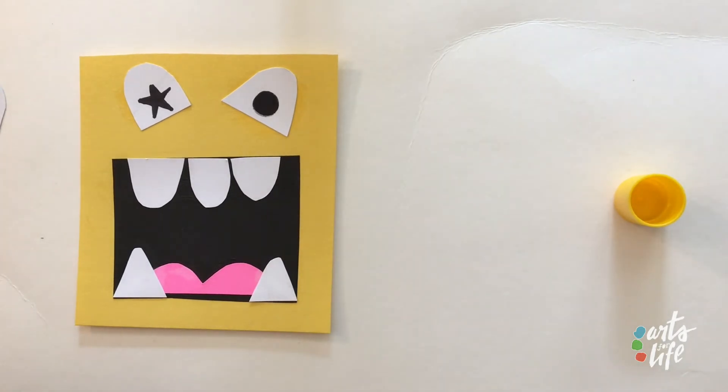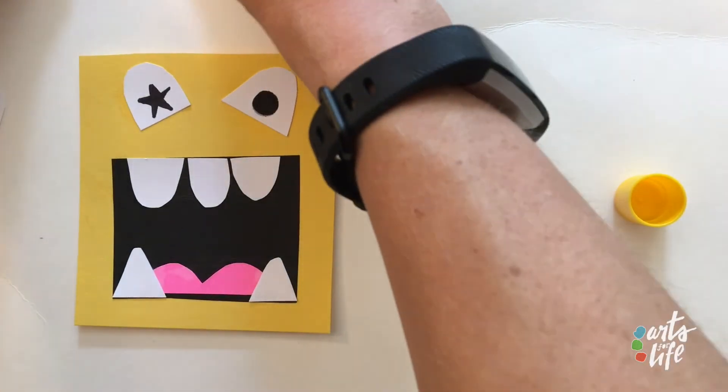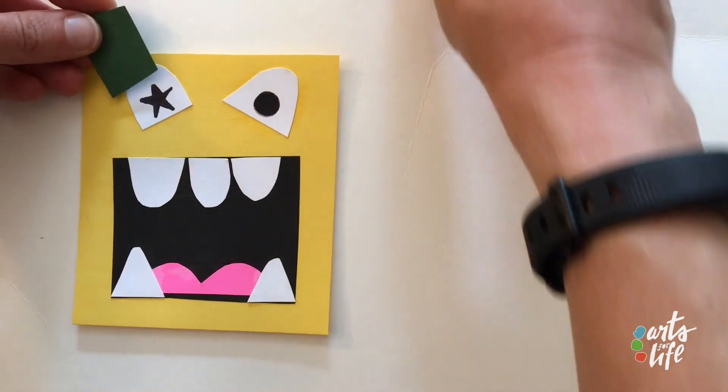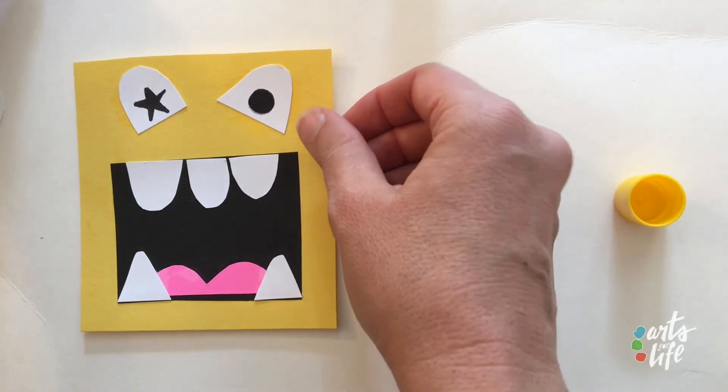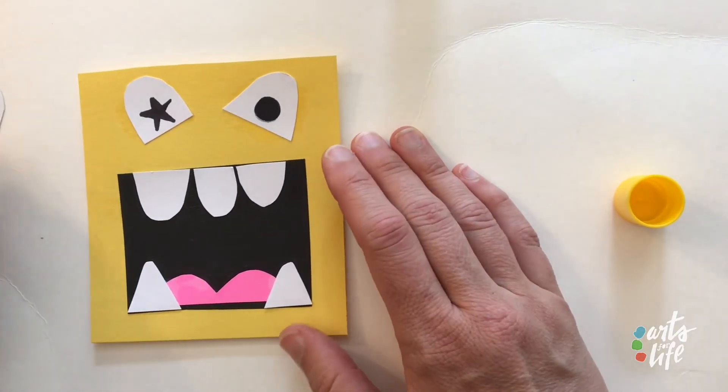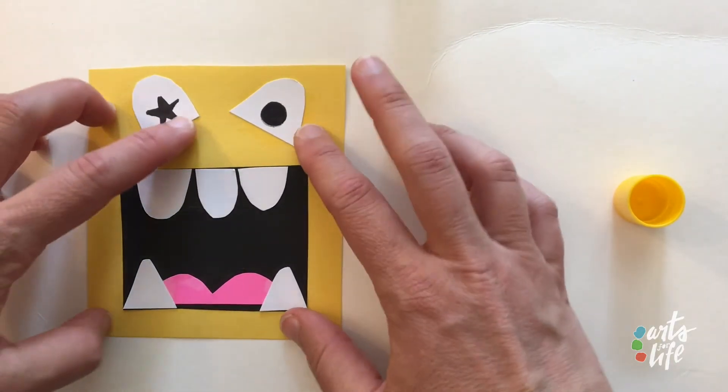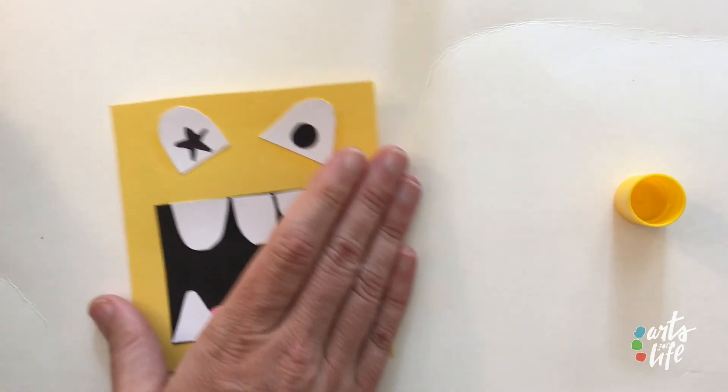So yeah, like I said, you can add anything else that you'd like. If you want to take scraps of paper, you can cut little features out. Like if you want any eyelids to go over the eyes. Anything that you think of that you can do. And if you have a kit, just see what else is in there and just play. I think I'm ready for my speech bubble.